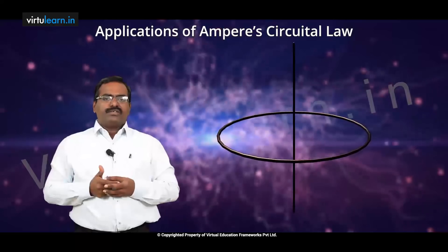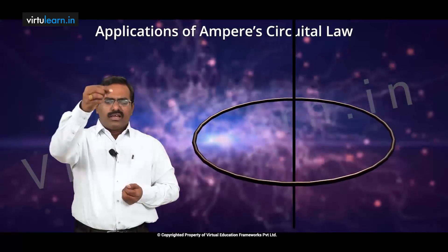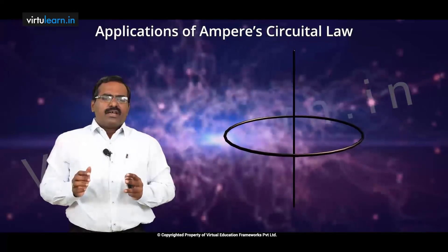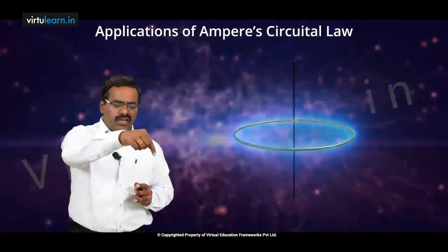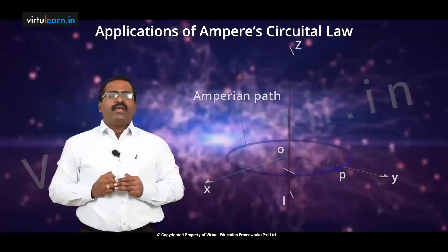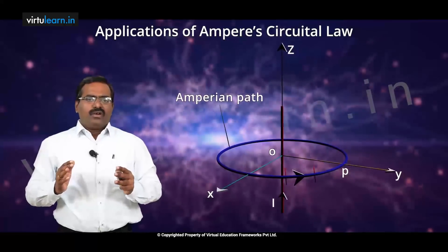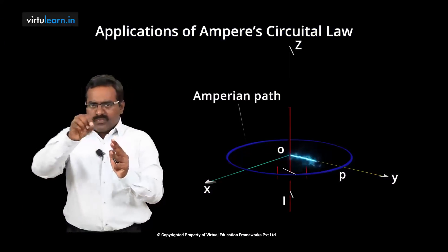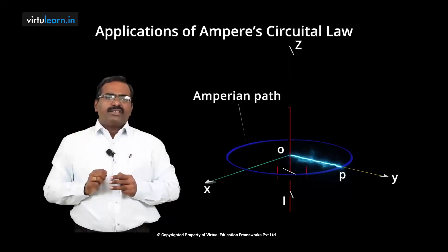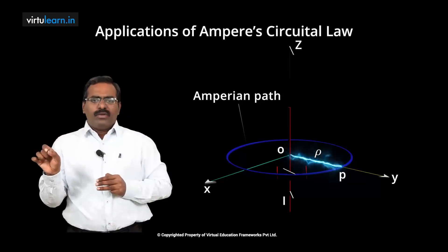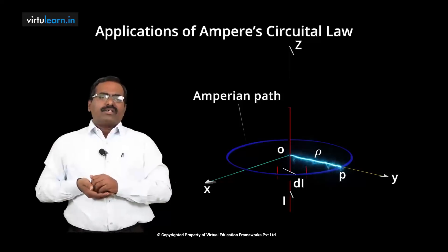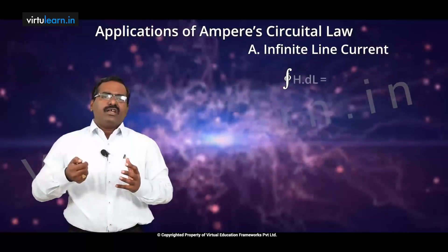Now we are going to get the same expression with the help of Ampere's law. Suppose we take a current-carrying conductor carrying some current i. To apply Ampere's law around this conductor, we take a closed path, known as the Amperian path. From the conductor to some point P on that closed path, we identify the distance ρ, and at point P we take a small length dl. Recall Ampere's law: the closed line integral of H dot dl equals i.